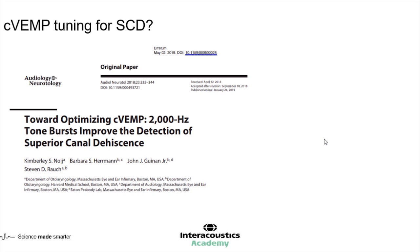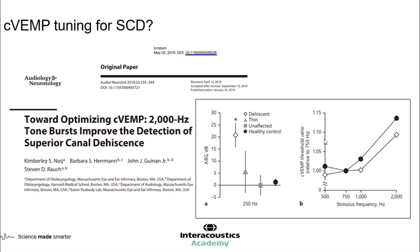Looking at C-VEMP frequency properties for superior canal dehiscence — typically we've focused on threshold becoming more acute, measuring down to 60–70 dB NHL. A study by Neuer et al. in 2018 looked at separating out these values relative to 750 Hz, and there is a big jump in C-VEMP tuning presence for superior canal dehiscence populations compared to healthy controls. This may allow us to identify third window phenomena through frequency tuning effects, without requiring repeated threshold measurements that have overlap with the normal population.